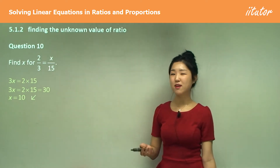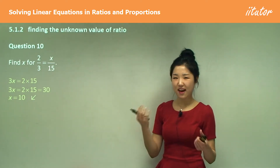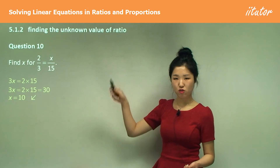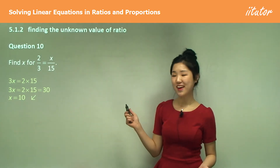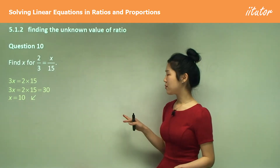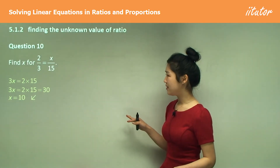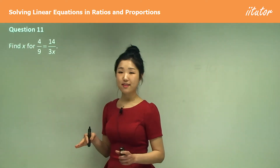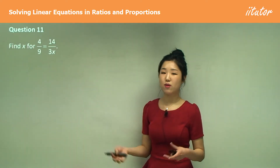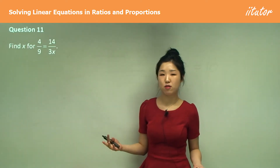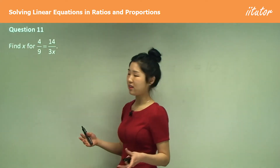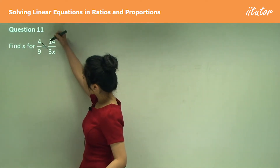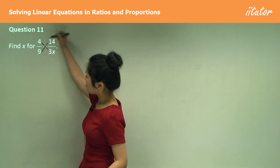Sometimes it's not that clear, so just use cross multiplication. Question 11: do the exact same thing — multiply 4 with 3x and 9 with 14.